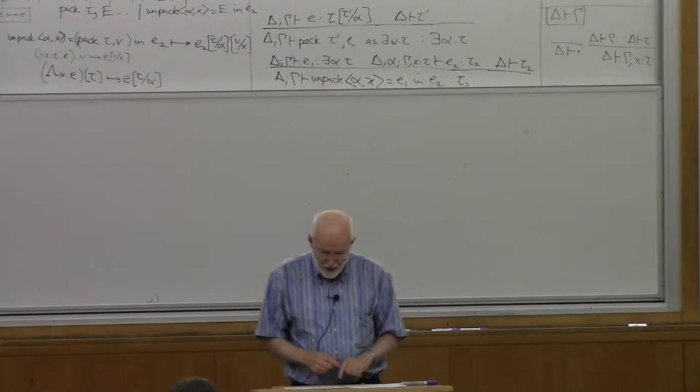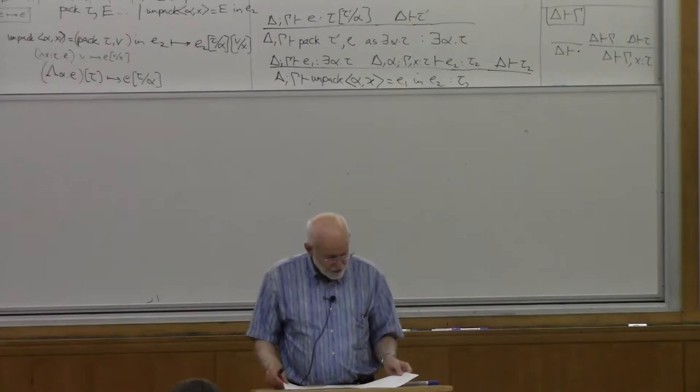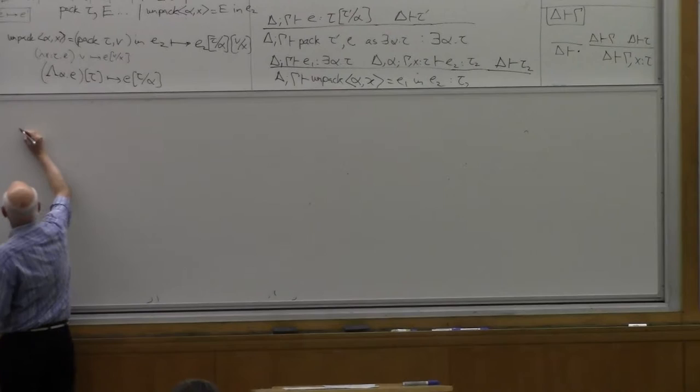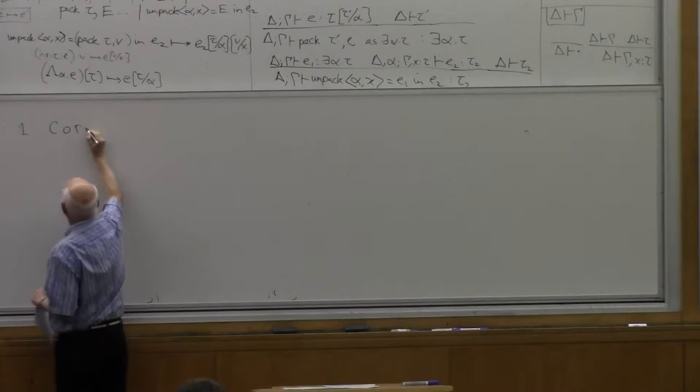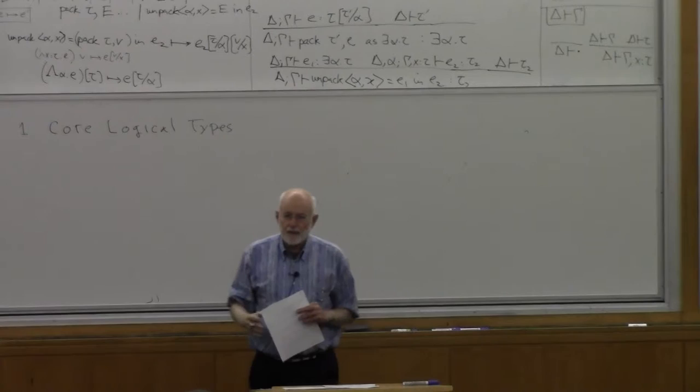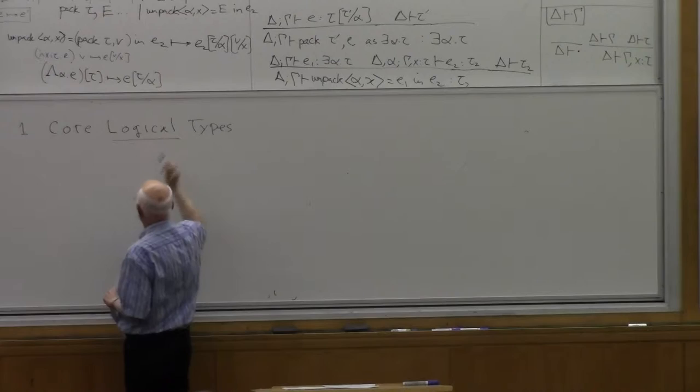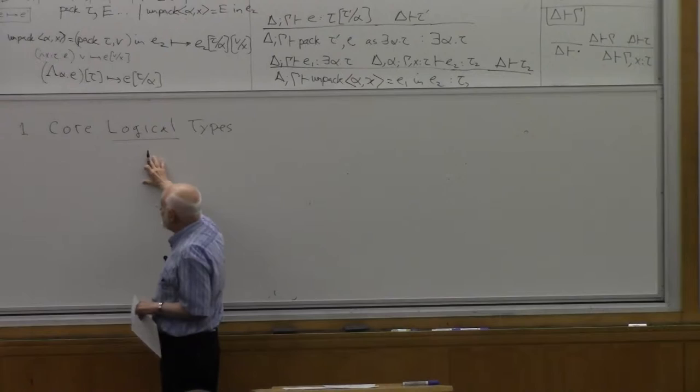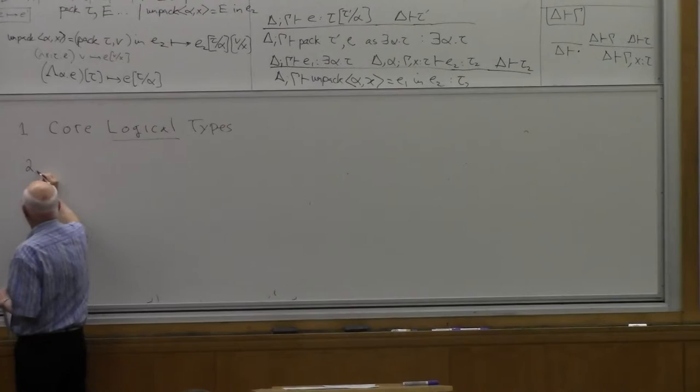The first topic I want to talk about are what I call the core logical types. And this is the part that we all agree on, right? So NuPRL, Agda, Coq. We all understand these core types and how, through propositions as types, they give us logic. So I want to talk about that, why they're so important and so forth. And I'll talk a bit, as Zena requested, about the history of this.